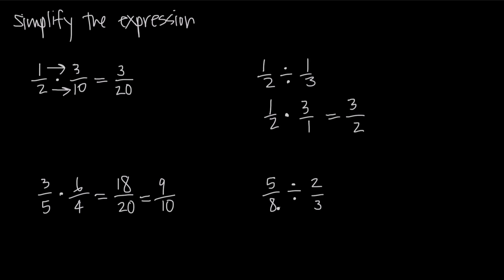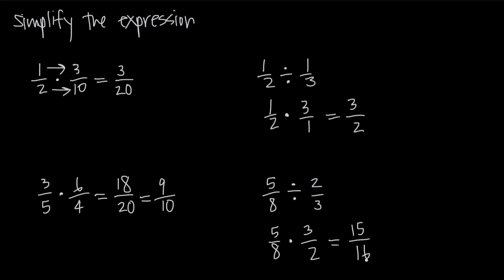We'll do a second example: we have 5/8 divided by 2/3. We'll leave the first fraction as is — 5/8 — and instead of doing division, we'll do multiplication, and then take our second fraction and flip it upside down. So instead of 2/3, we'll do 3/2. Then this is a multiplication problem and we multiply straight across: 5 times 3 in the numerators gives us 15, and 8 times 2 in the denominators gives us 16. Our final answer is 15/16.